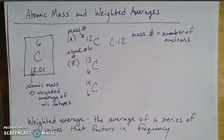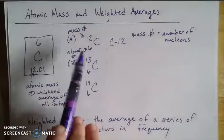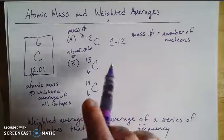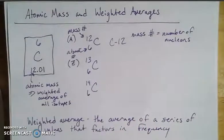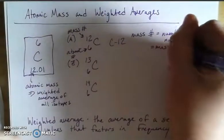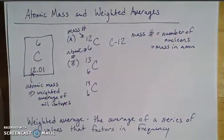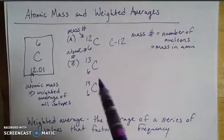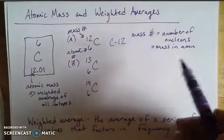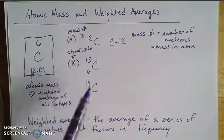You'd think A would stand for atomic number, but you'd be incorrect. Mass number is the number of nucleons, meaning the total count of protons and neutrons — so 12 means 12 total protons and neutrons, and that is the mass of that particular isotope in atomic mass units. The mass number reflects how many particles are in the nucleus.